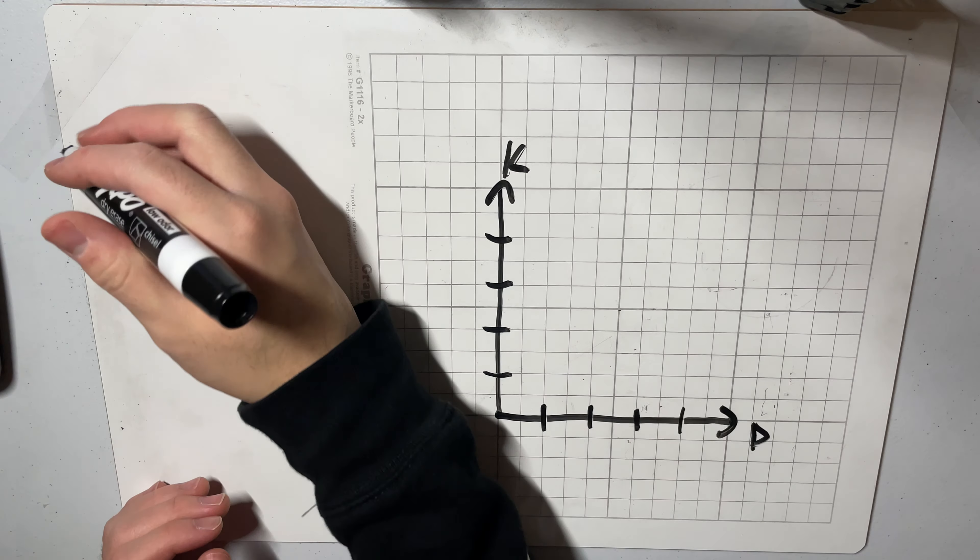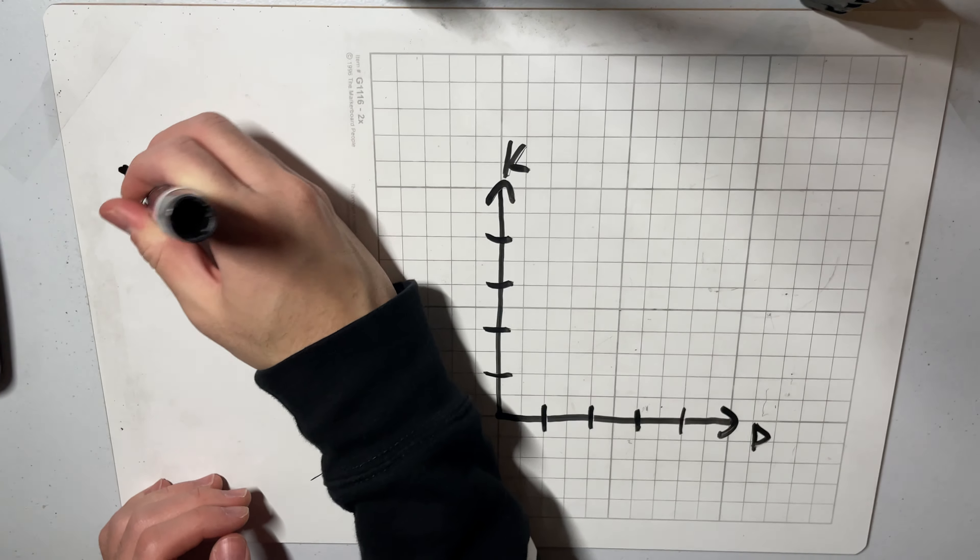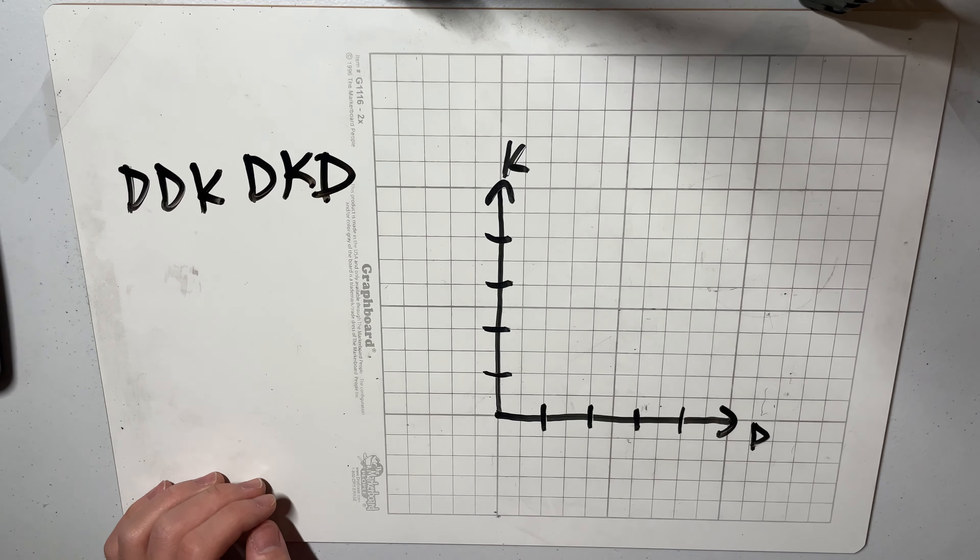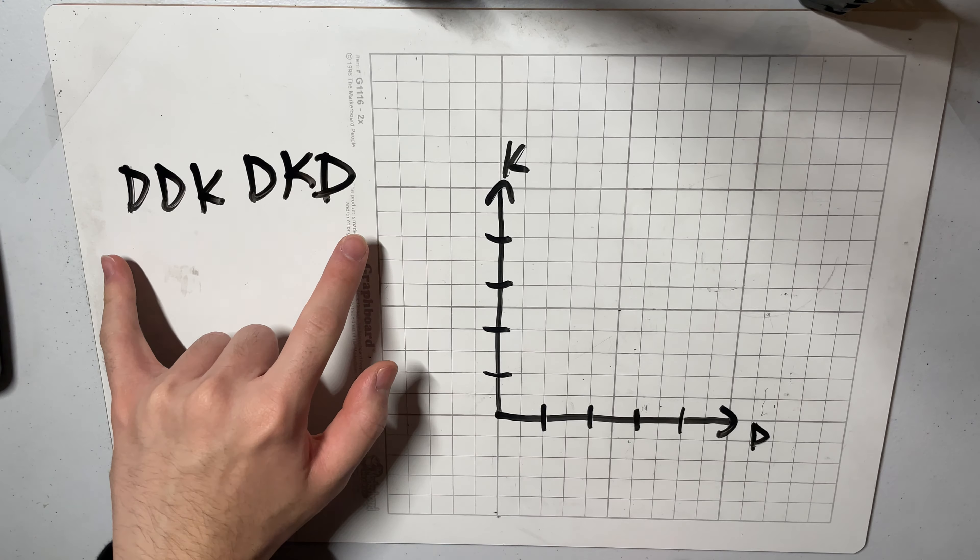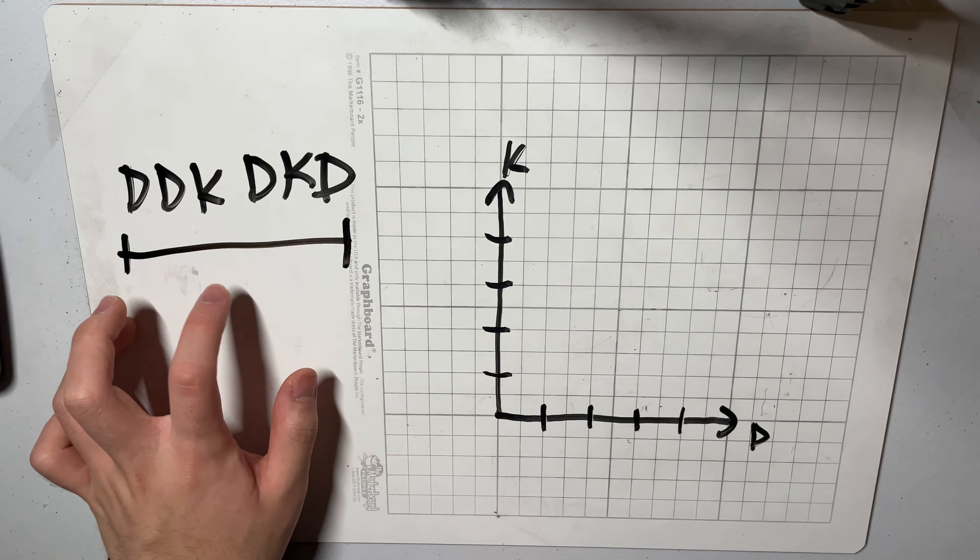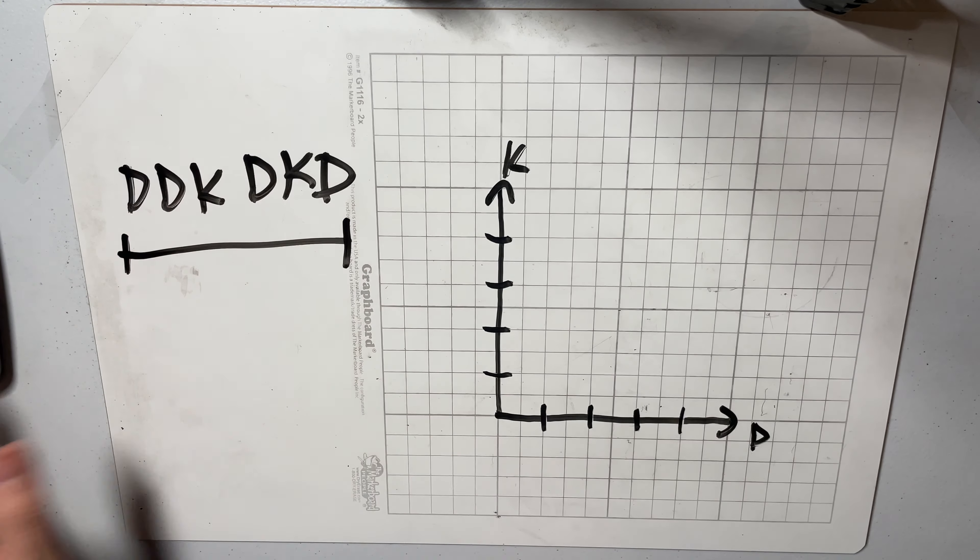So if we assume that our input looks something like DDK DKD and let's assume that we just want to solve a prefix for the entire string. We want to find the maximum number of blocks you can split this into such that each block has the same ratio of d's to k's.